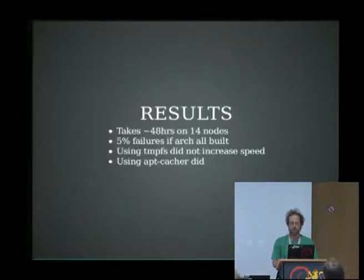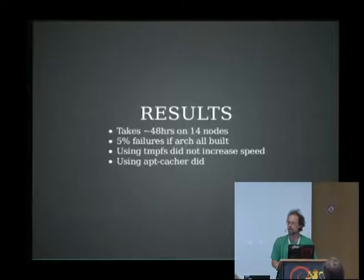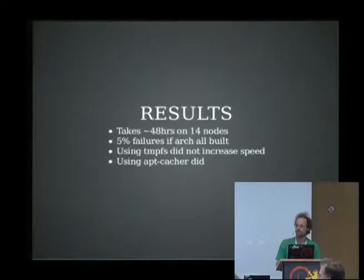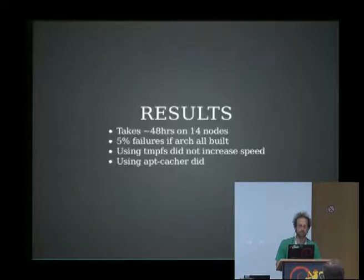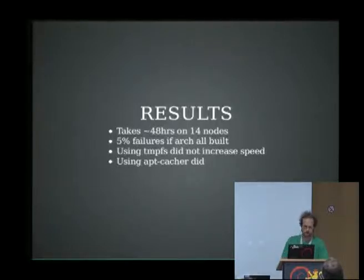My understanding was it should be much faster if you build in tmpfs instead of real file systems, but it didn't actually seem to be — I don't know if that's because the kernel is really clever about memory management these days. My experience is if you use eatmydata you get all the benefits that you used to get with tmpfs without the pain. That's a default in some sbuild setups. And apt-cacher was really helpful — that does make a big difference, even with a fast network.